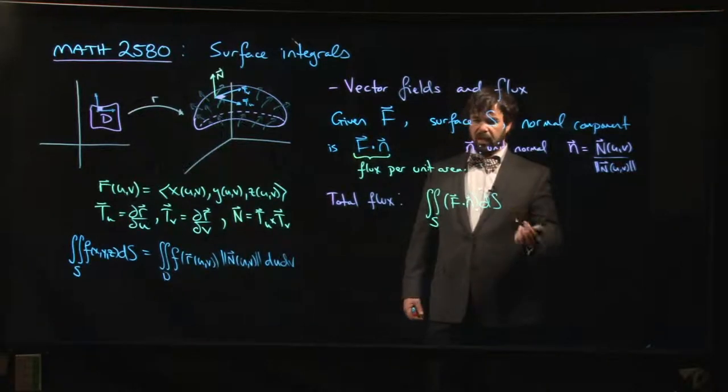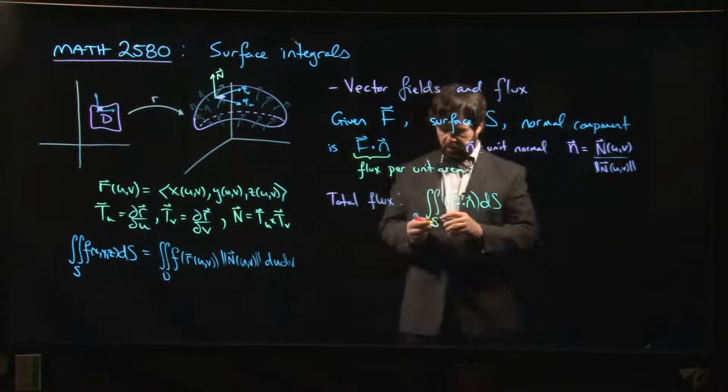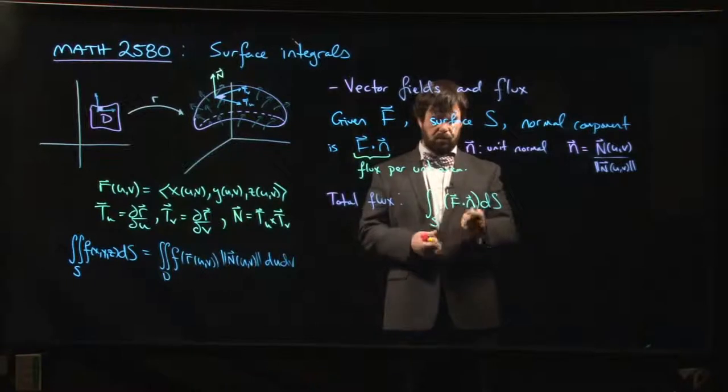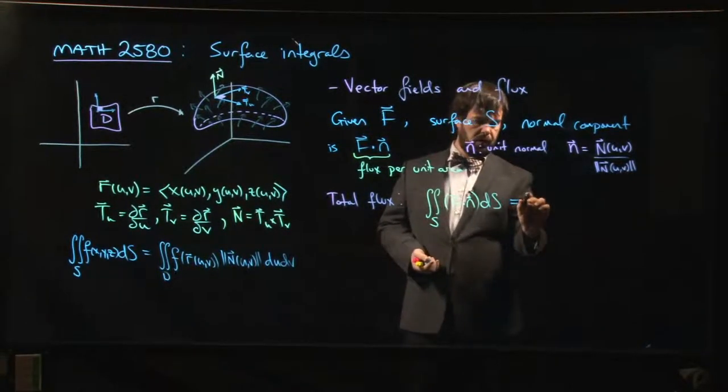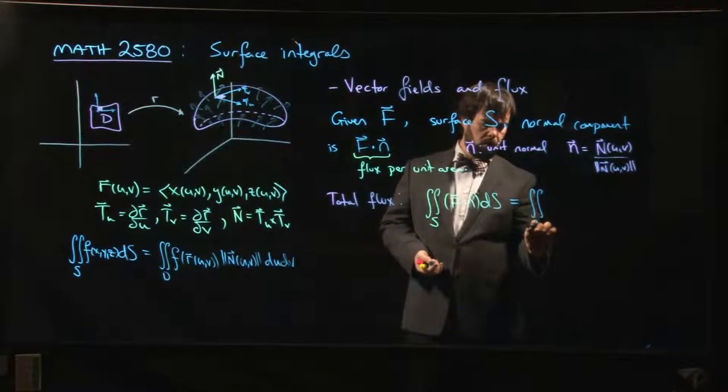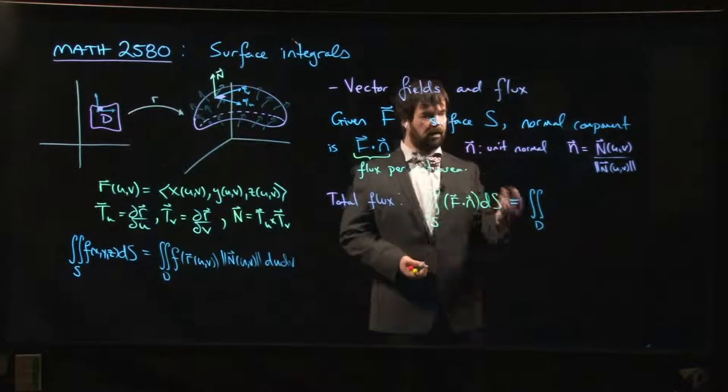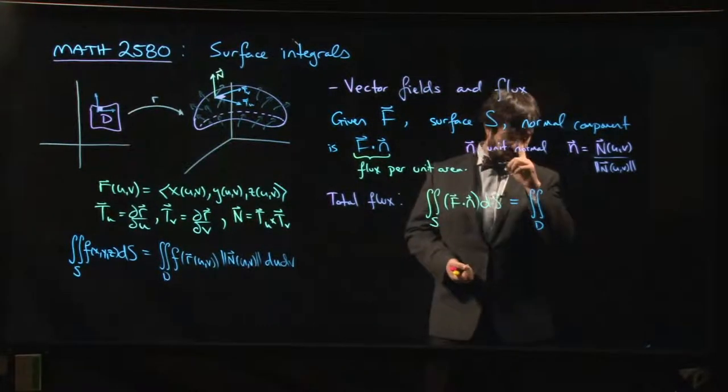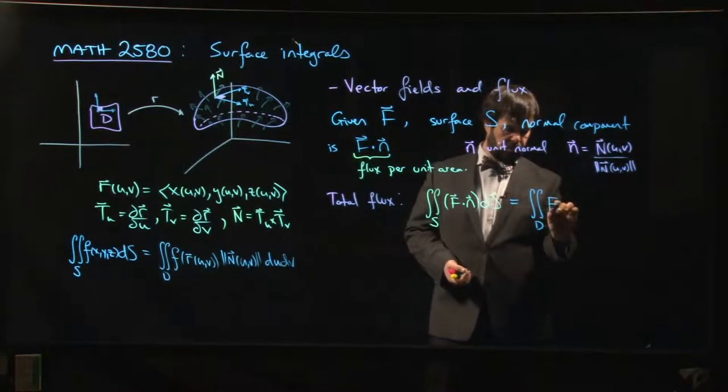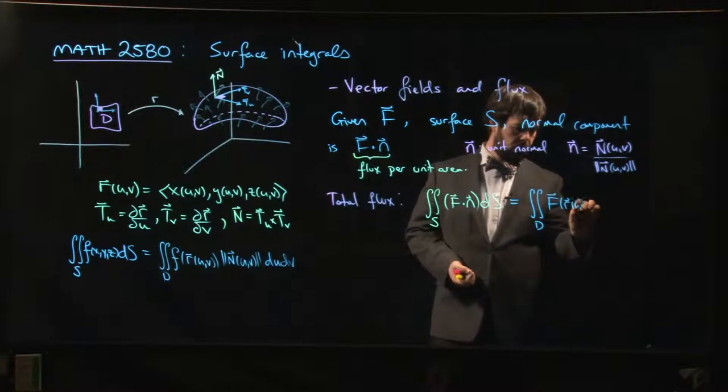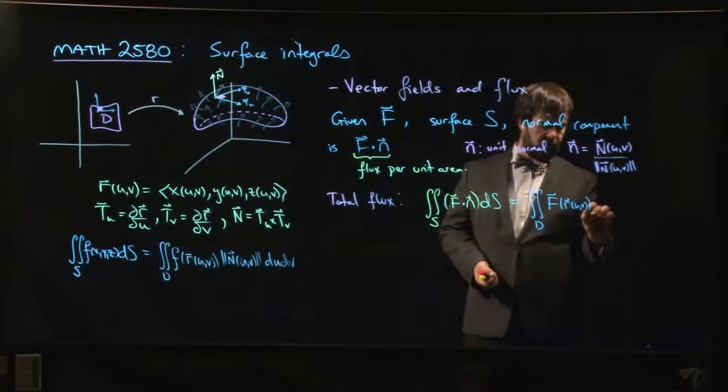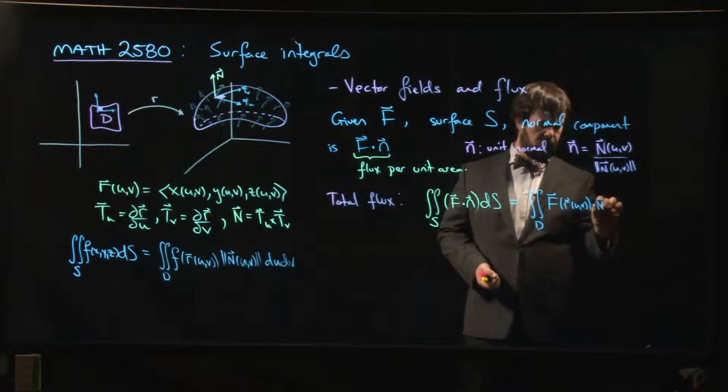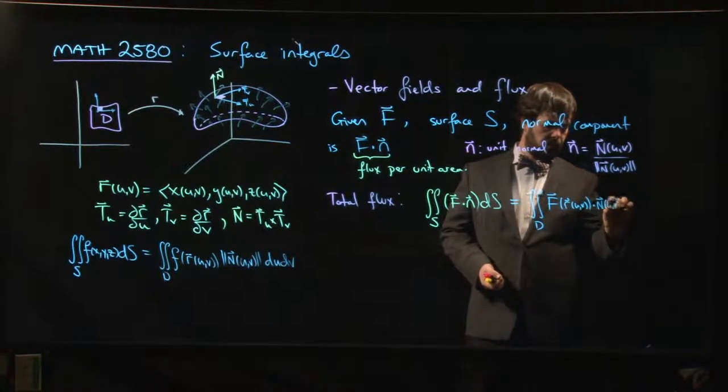One of the things you might notice is that once you parameterize, for any parameterization that you happen to choose—at least for a parameterization that respects the orientation—you're going to get F of r(u,v), and the unit normal is n(u,v) divided by the magnitude.